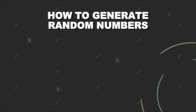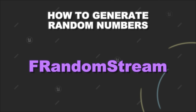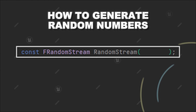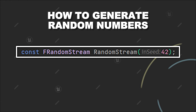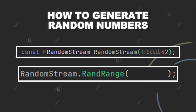And for that purpose we can use fRandomStream. When creating a fRandomStream object we can pass a seed value to it — let's say 42. And then we have an object of fRandomStream, which also offers a RandRange method. This conceptually works the same way as fMathRandRange, so it takes also the minimum and maximum for the range for your random number generation.